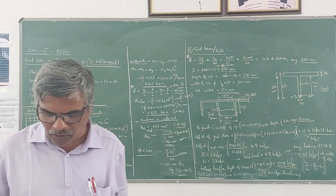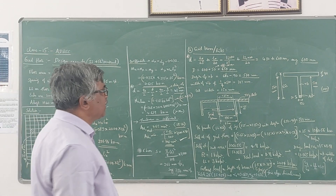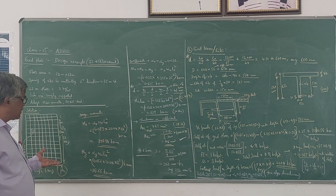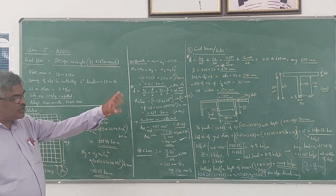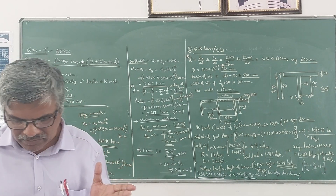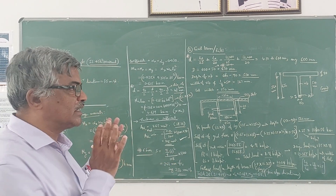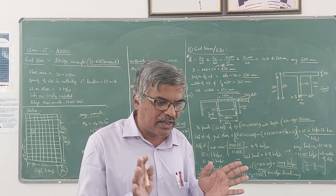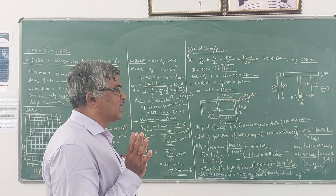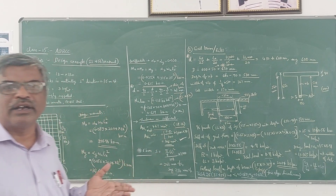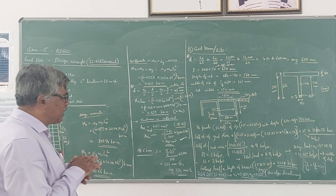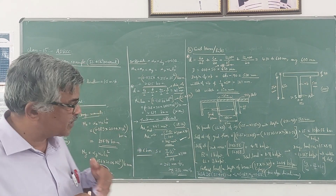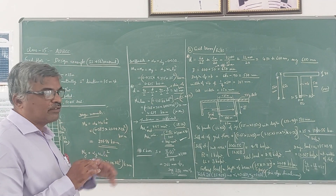For the T-beam, the next steps are to fix the T-beam dimensions, calculate the neutral axis, and determine the required reinforcement — following the standard T-beam design procedure in RCC. The remaining design will be continued in the next video.